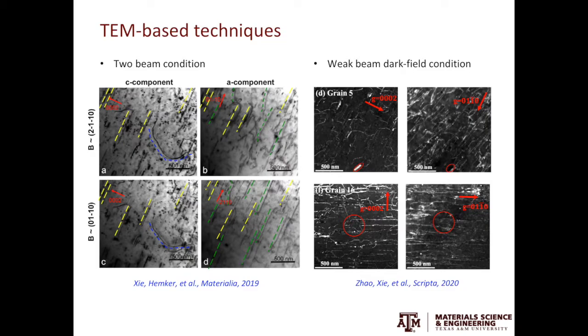Either you are doing the two-beam condition or the weak beam dark field condition, you have to be aware of the G.B invisibility criterion, where G is the diffraction vector and B is the Burgers vector. If G.B is equal to zero, the dislocation will not show any contrast. If you are interested in this topic, you can refer to my TEM dislocation imaging and weak beam dark field imaging videos in the TEM course.